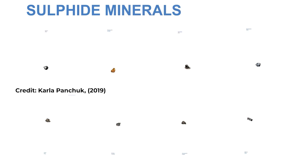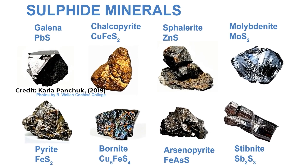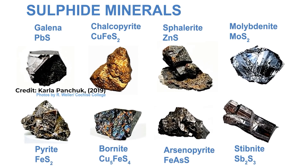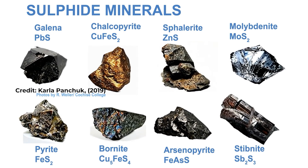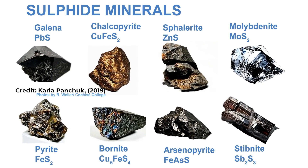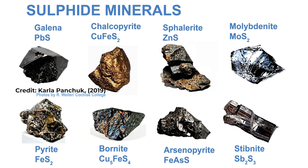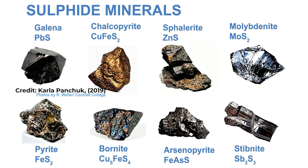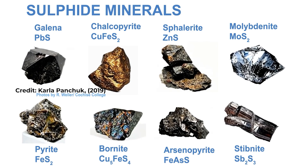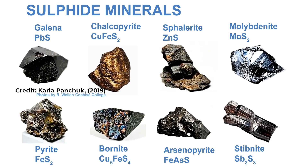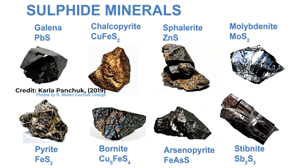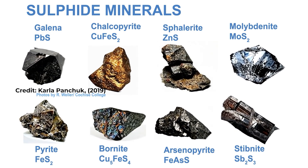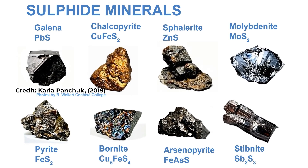Sulfides are formed when metallic elements combine with sulfur. What sets them apart from sulfates is that sulfides do not contain oxygen. Pyrite, or iron sulfide, is a common sulfide mineral known as fool's gold — people may mistake pyrite for gold because the two minerals are shiny, metallic, and yellow in color. After all, not everything that shines is gold.